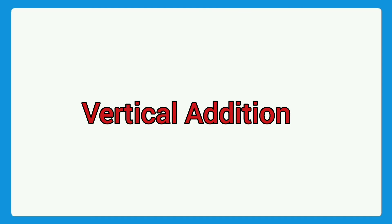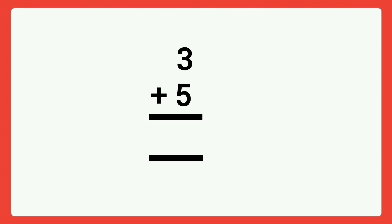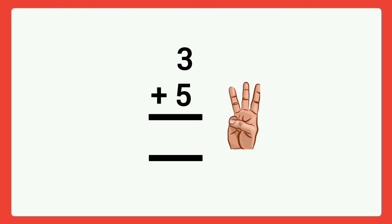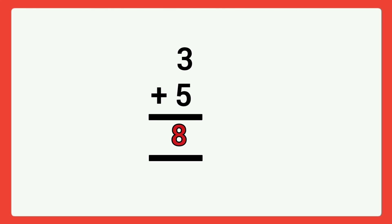Next, vertical addition. Vertical means column-wise, like a standing line. Here the question is three plus five. The numbers are written in column-wise — that is called vertical addition. What is the answer? Three plus five: keep five in your mind, take three fingers and start counting from five. Six, seven, eight. The answer is eight. Three plus five is equal to eight.